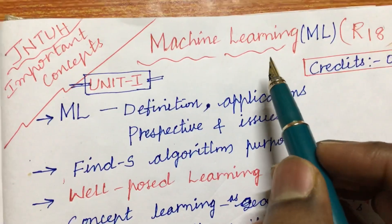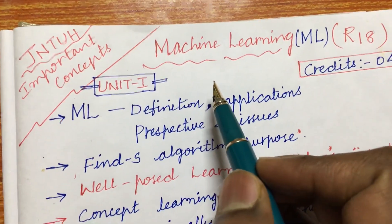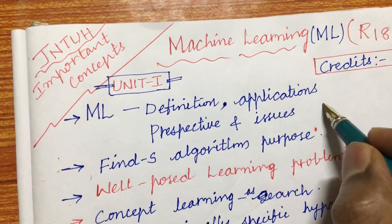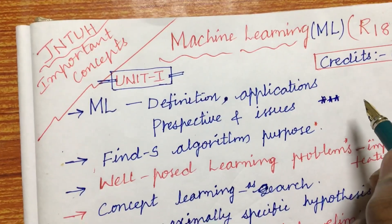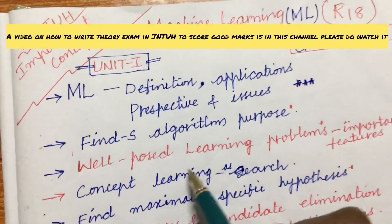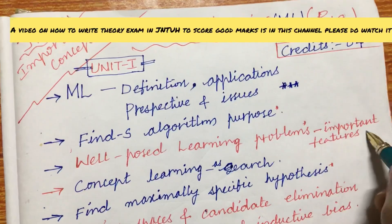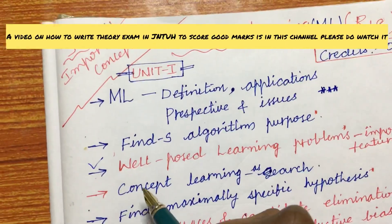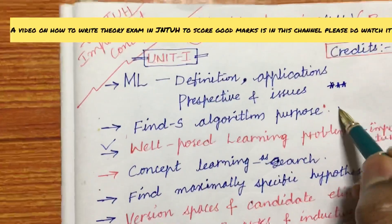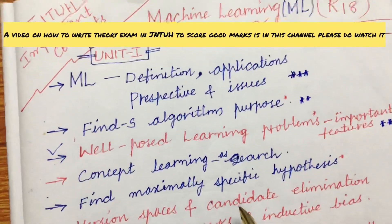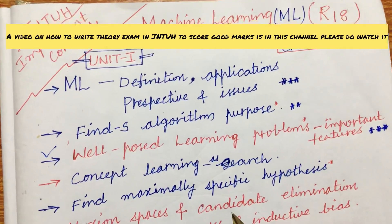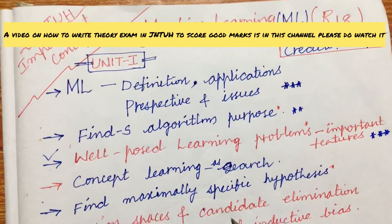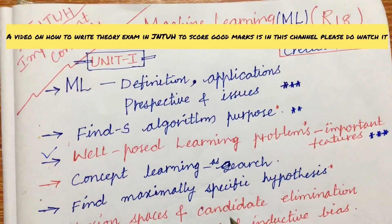Hope you all have started your preparations for the final examination. Under the machine learning course for R18, I am going to highlight certain important topics. I have taken only a few concepts which are very important from previous year question papers, as well as analysis done by me through the complete syllabus of JNTUH for the machine learning course. Please make sure to concentrate on the parts I am going to speak here, and I will also give you tips on how to take this exam and score better marks.